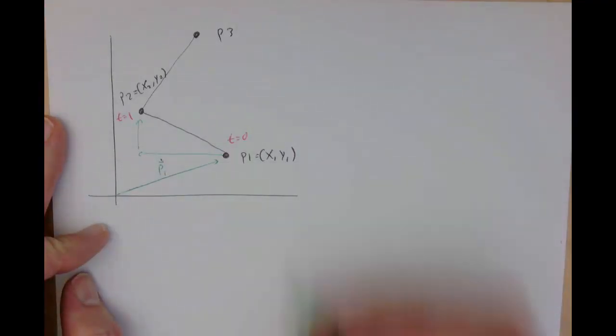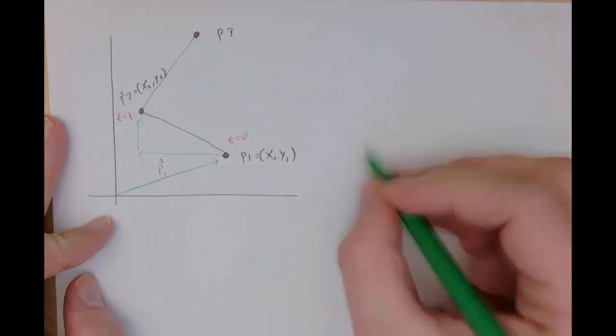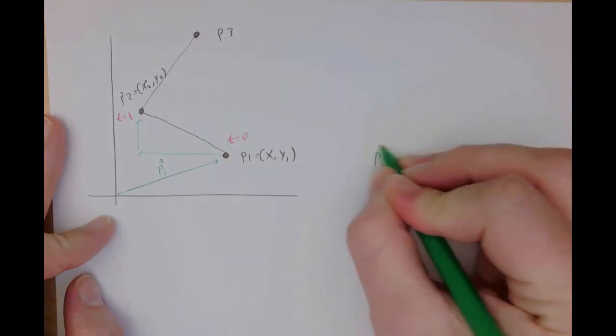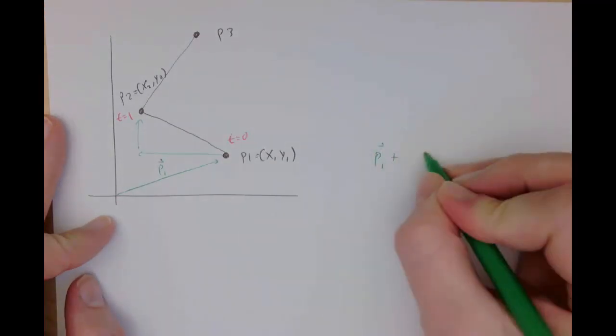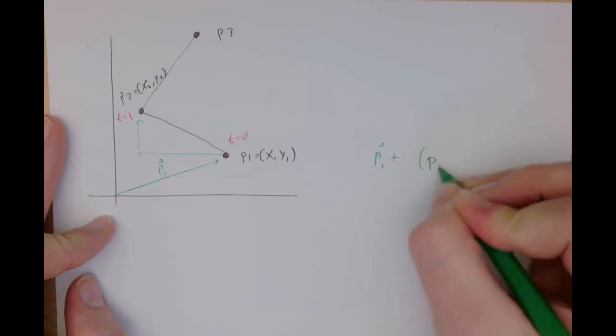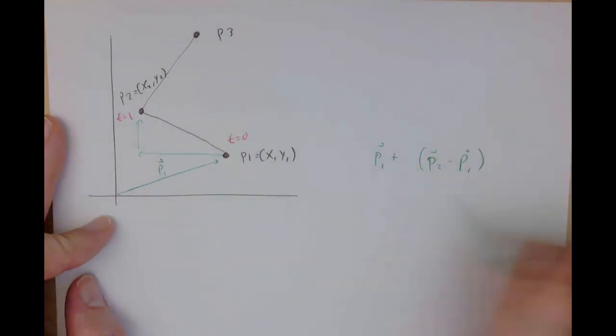So what we'd actually have is x2 minus x1 should give us that change in x, and y2 minus y1 should give us the change in y. So you could construct it that way, but you can write it all in terms of vectors like this. You could say p1 plus p2 minus p1, and then that's what's scaling with time.